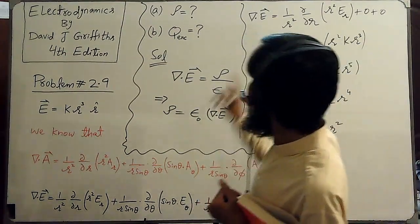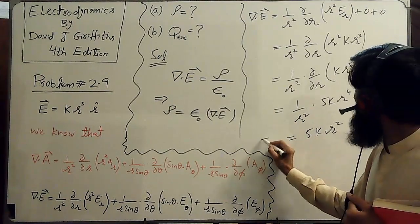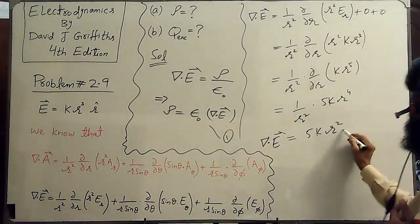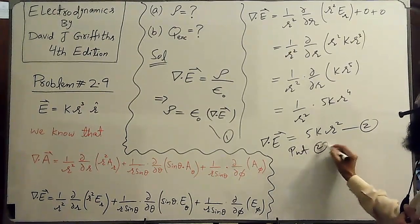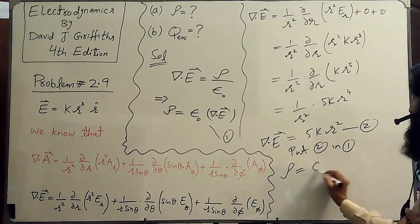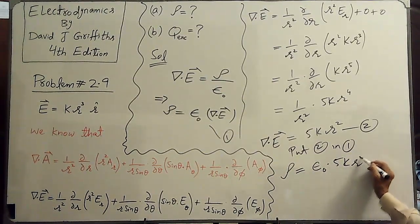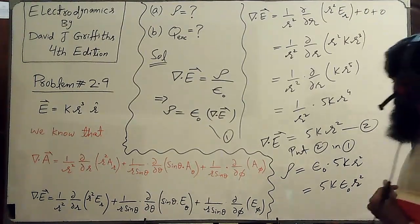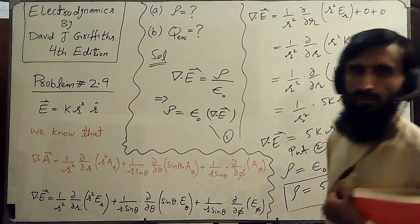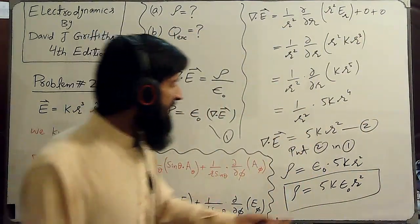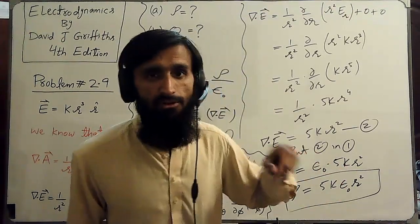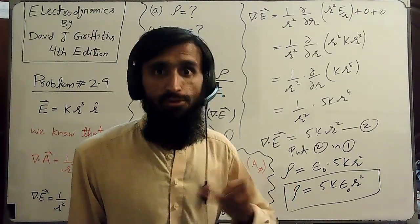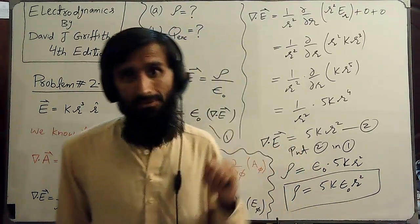So the divergence of our given vector is 5K R². By putting this value of del dot E into equation 1, we get rho equal to 5K epsilon naught R². This is our first required quantity. Note that you cannot replace K with 1/(4π epsilon naught) because this is not the Coulomb constant — the problem states K is just any constant, so making that substitution would be a mistake.